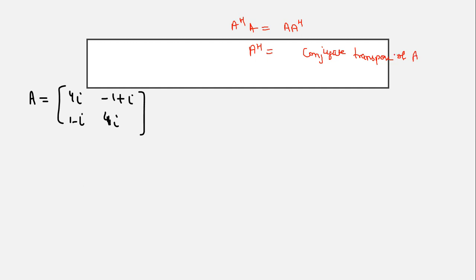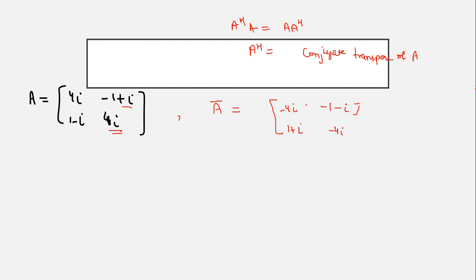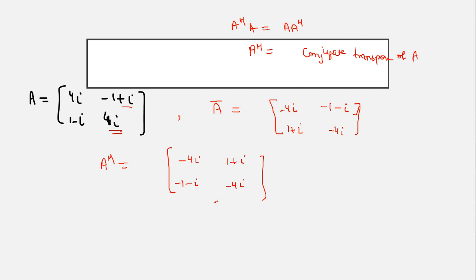So let's find A raised to the power H. This is A. I need to find the conjugate first. The imaginary parts will have their signs changed: minus 1 is real so stays as is, but plus iota becomes minus iota, and the other imaginary term becomes minus 4 iota. This is the conjugate. Now for the conjugate transpose, we change rows into columns: minus 4 iota, minus 1 minus iota in the first column, and 1 plus iota, minus 4 iota in the second. This is A raised to the power H — the conjugate transpose of A.